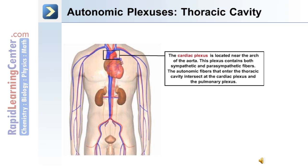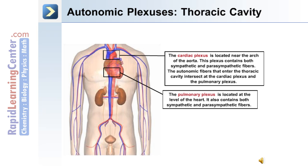The cardiac plexus is located near the arch of the aorta and contains both sympathetic and parasympathetic fibers. The autonomic fibers that enter the thoracic cavity intersect at the cardiac plexus.